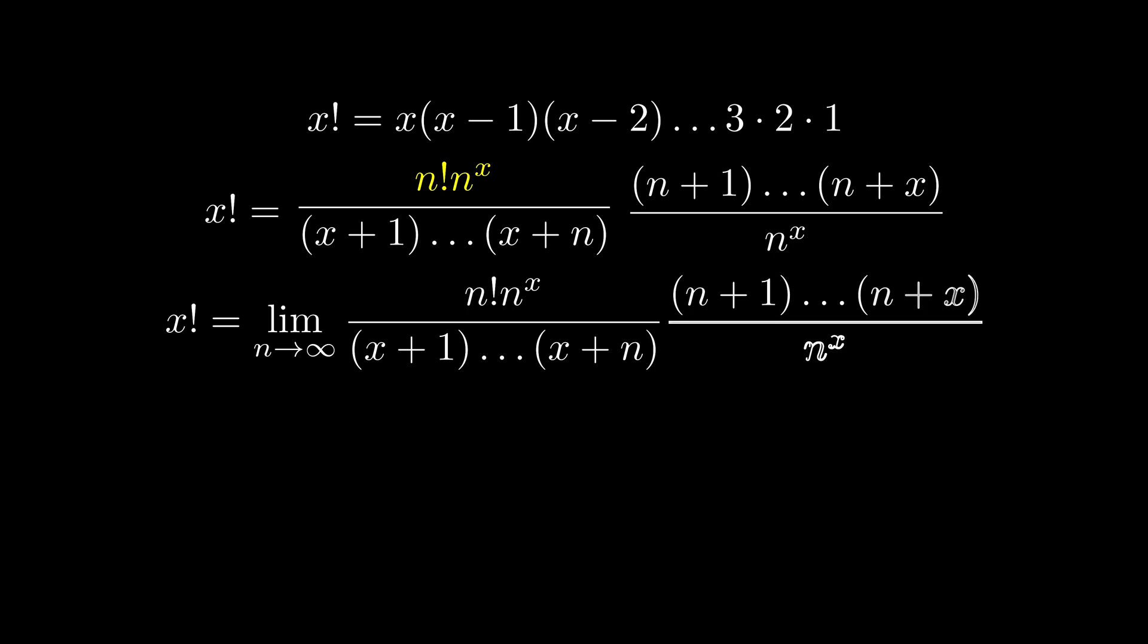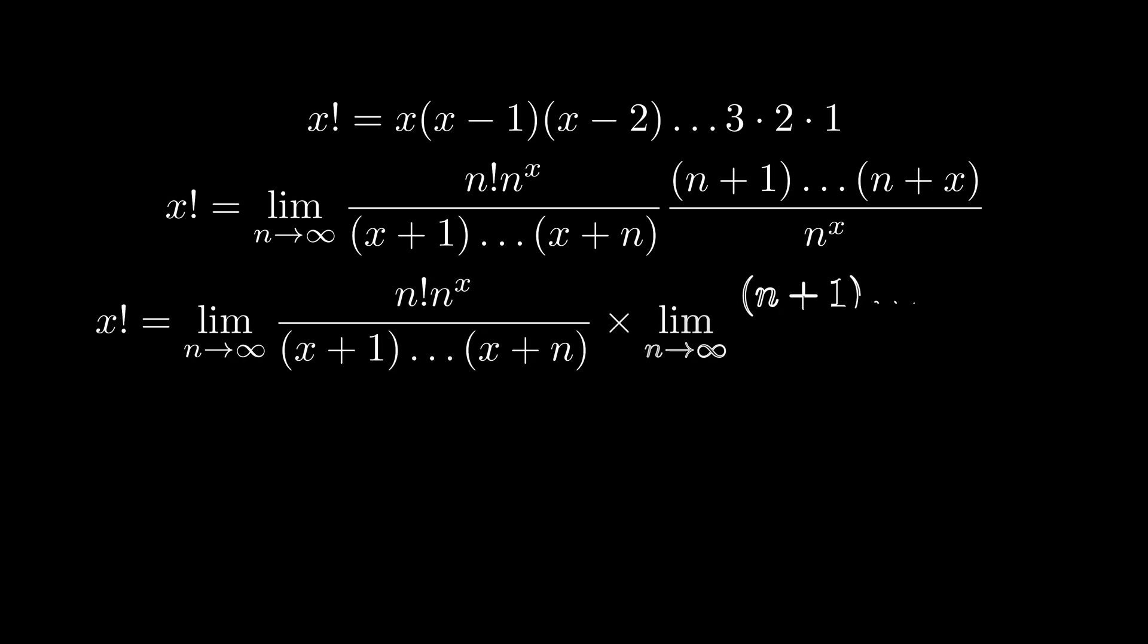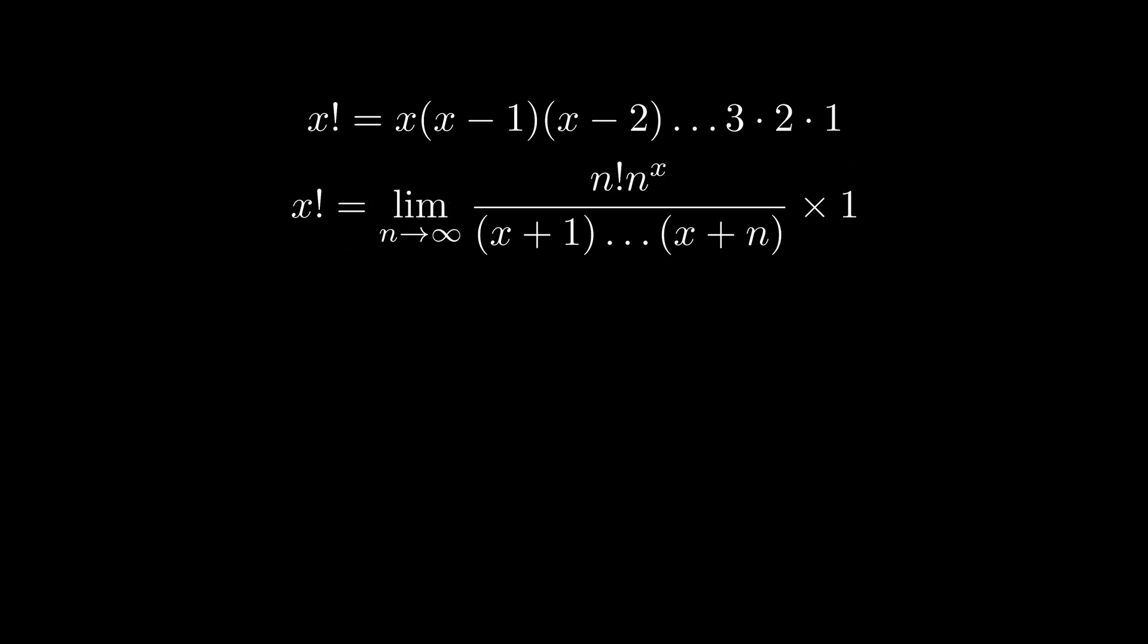Now it's time to send n to infinity. There isn't much we can say about the first fraction but for the second fraction when x is finite as always the second fraction goes to 1 because n plus 1 over n, n plus 2 over n up to n plus x over n when n goes to infinity is just 1.